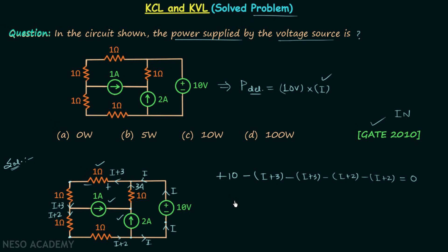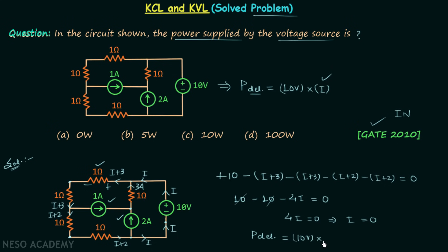When you simplify this you get: 10 minus 2(I plus 3) minus 2(I plus 2) = 0, which gives 10 minus 10 minus 4I = 0. The 10s cancel, so 4I = 0, which implies current I = 0. Therefore, the power delivered by this source equals 10 volts multiplied by 0 amperes, giving 0 watts — so option zero is the correct answer.